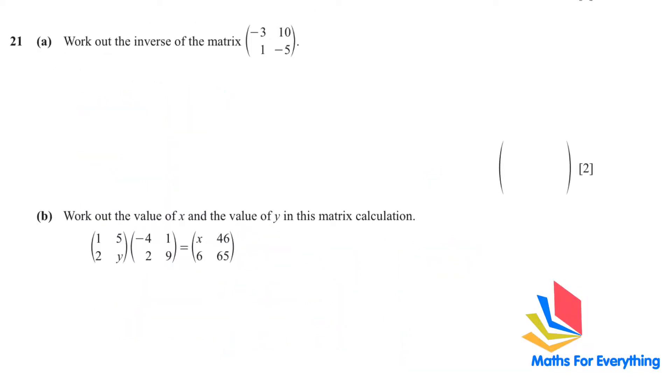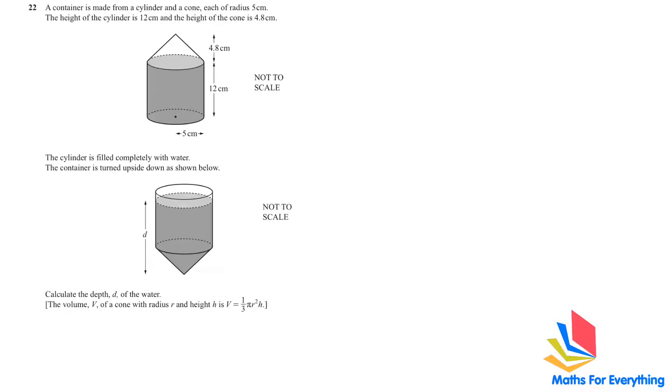Question number 21 is a matrix question. It is no longer a part of your syllabus, so we don't need to solve it. Question number 22 is a very long question but it's not difficult. A container is made from a cylinder and a cone each of radius 5 cm. The height of the cylinder is 12 and the height of the cone is 4.8. The cylinder is completely filled with water and then the container is turned upside down. When you turn the cylinder upside down, the water from the cylinder will flow to the cone, so you will have empty space on top.